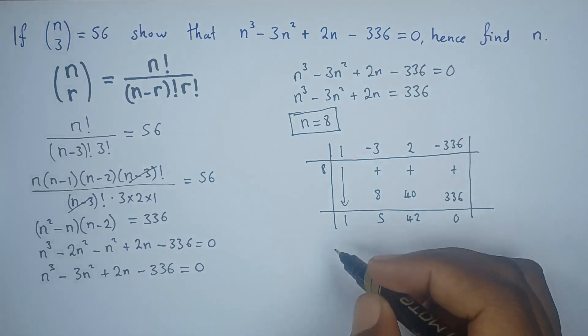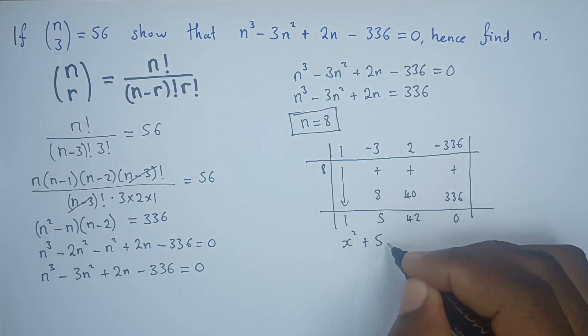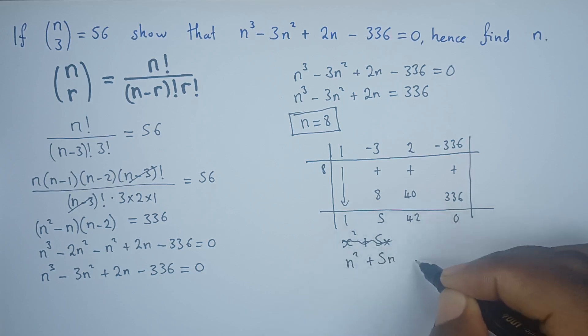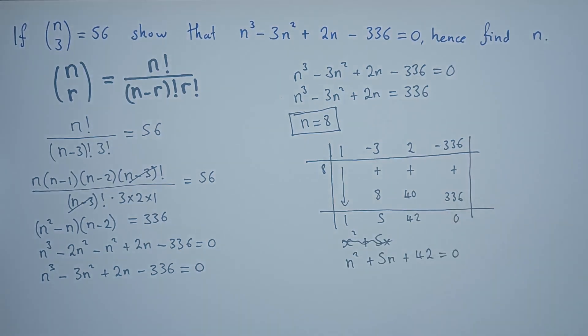So the quadratic equation that we form is n² + 5n + 42 equals 0. Now from this quadratic equation, we're supposed to solve for n. But it will give you a complex root. Hence, the only solution for n is 8.